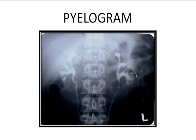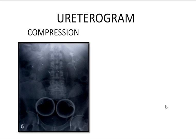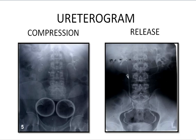The second step shows the normal pelvicalyceal system appearing within less than 15 minutes — the minor calyces, major calyces, renal pelvis, and upper part of the ureter appear on both sides at the same time. We can delineate the ureter by the compression film: we place compressing agents like two tennis balls in the lower abdomen and fasten a belt around the waist to permit the ureter to fill from above. Then we release compression and the dye passes through the whole ureter.